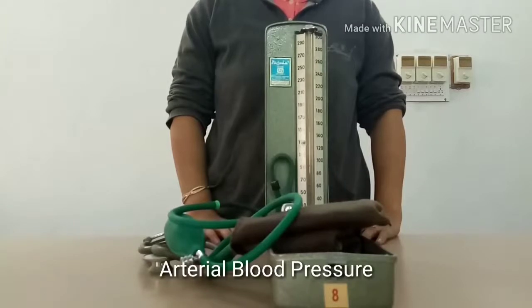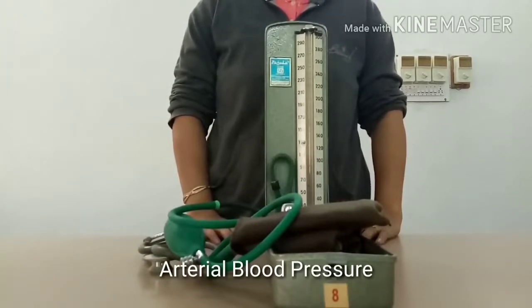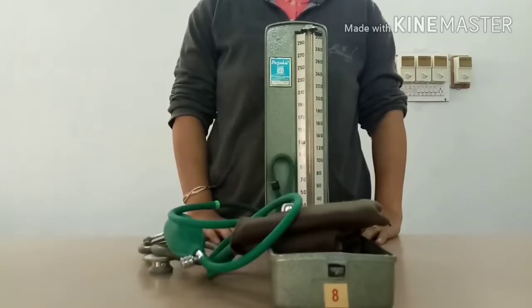Hello everyone. Today we will discuss arterial blood pressure. Blood pressure is the lateral pressure exerted by a moving column of blood on the blood vessel wall.